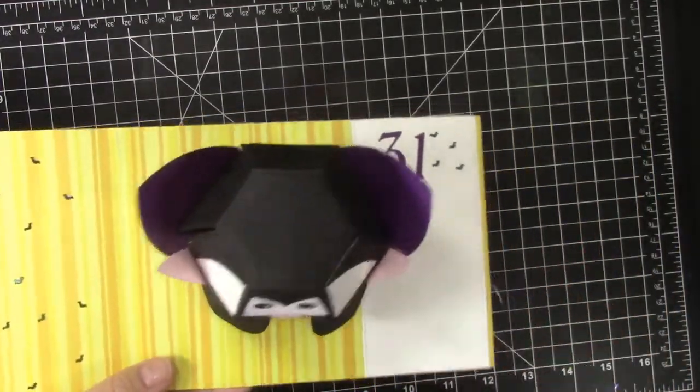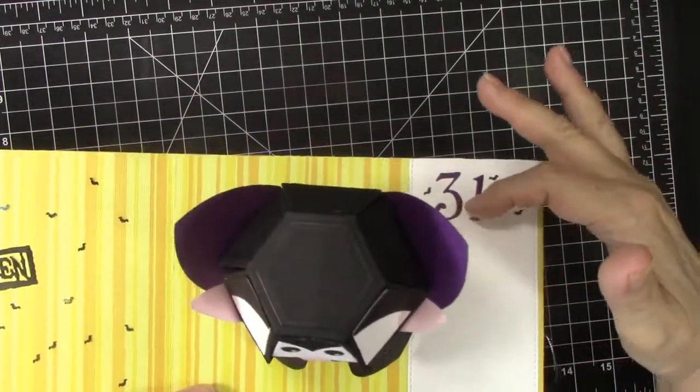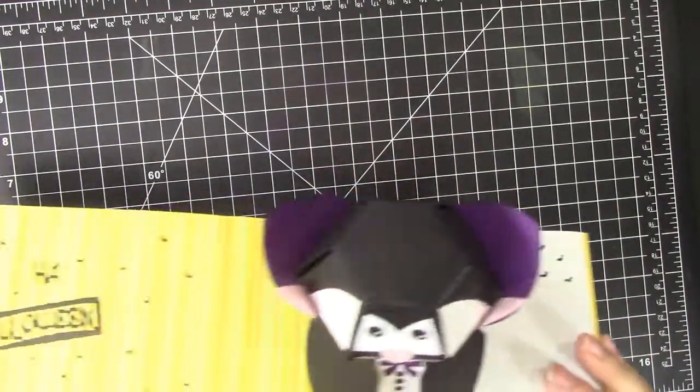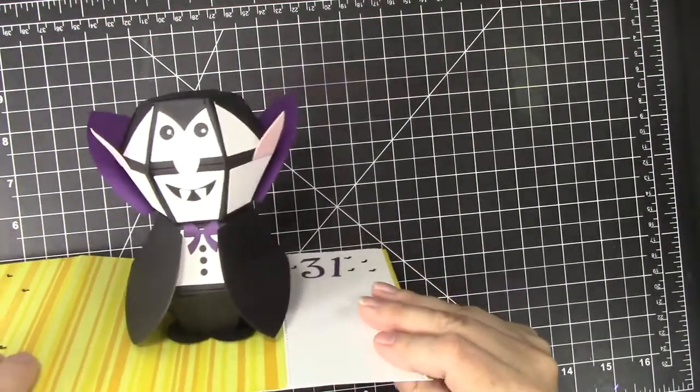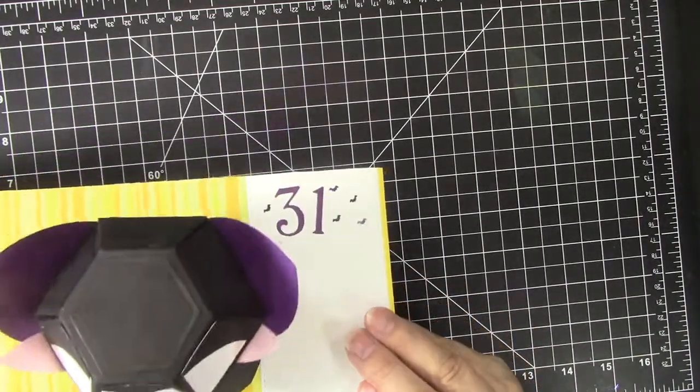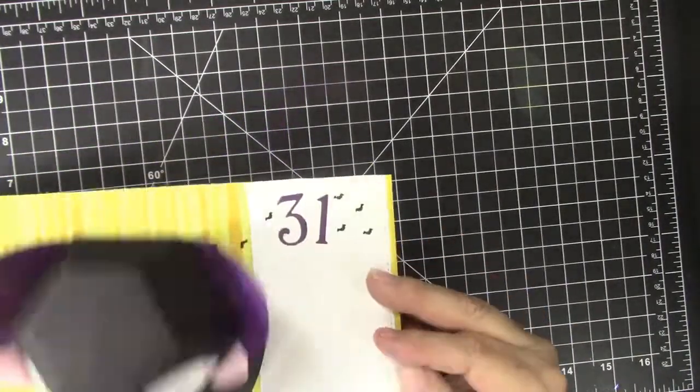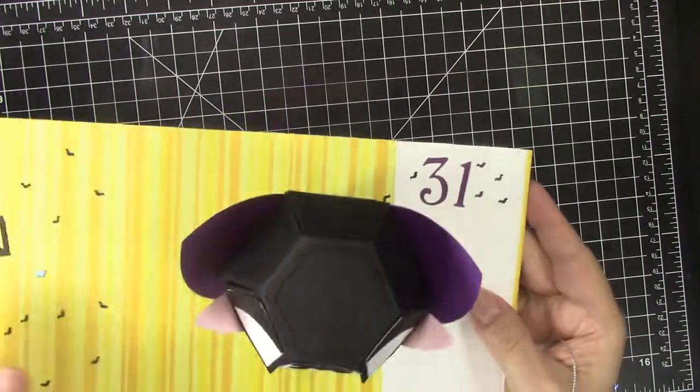And guess what the number of the day is? It's 31, and there are 31 bats if you wanted to count them, and I'm sure my grandson will when he gets this super cute Count Dracula pop-up card.